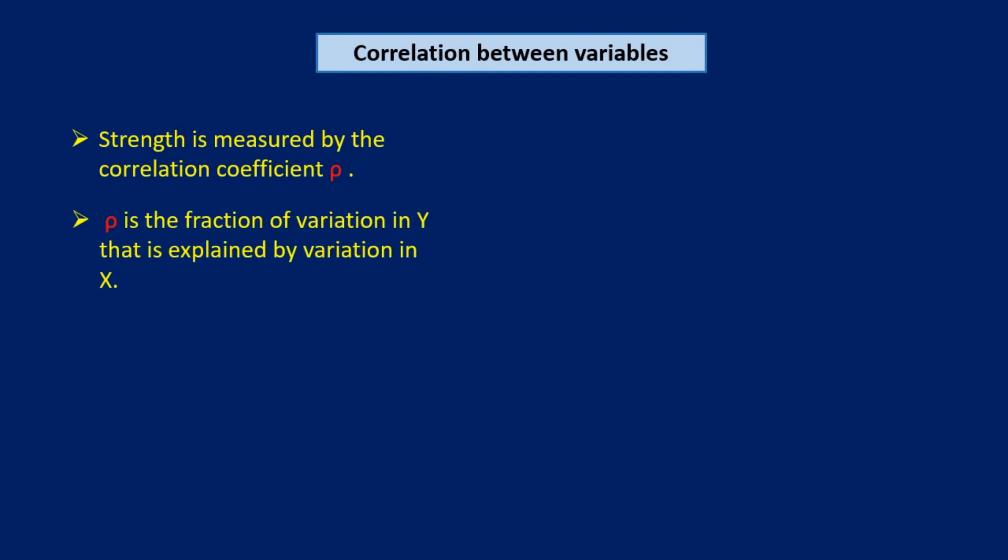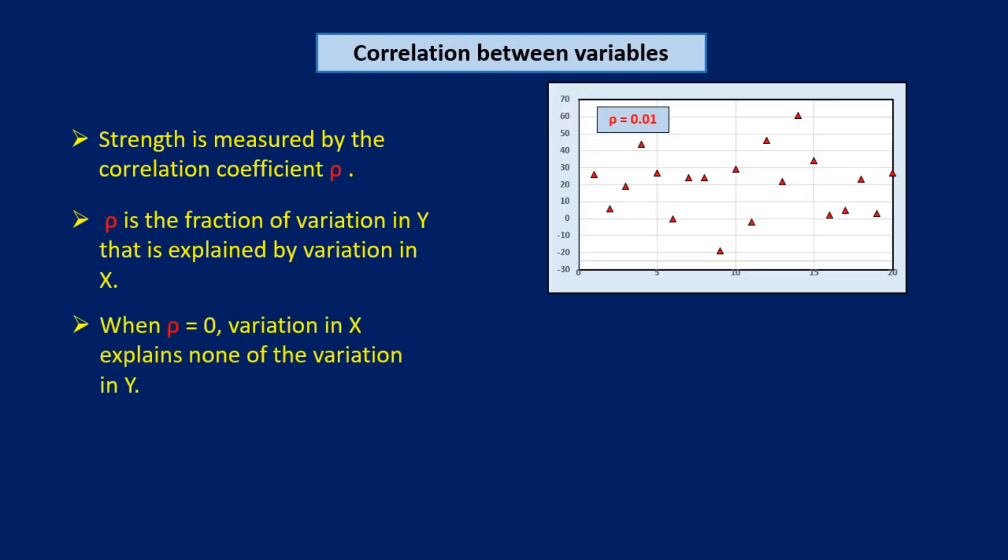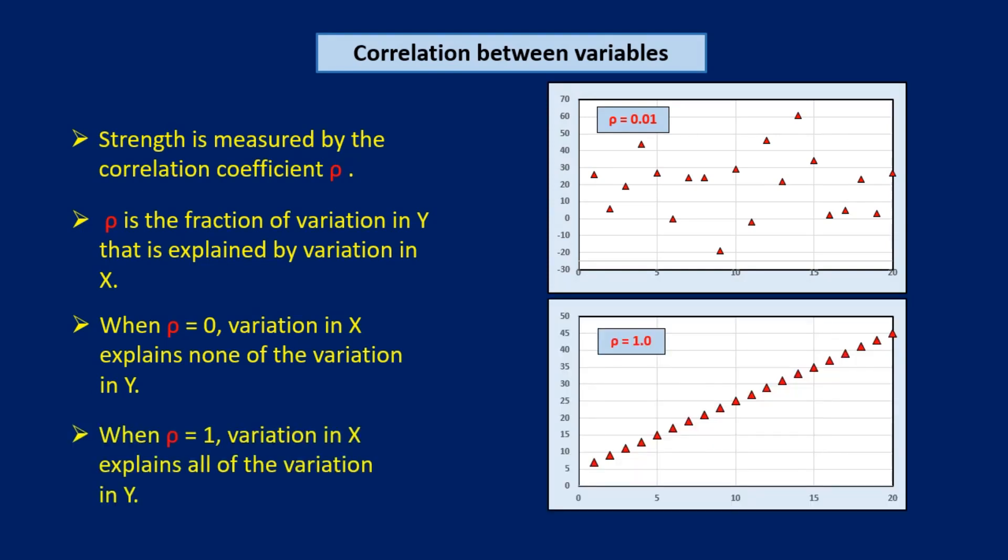Rho is a fraction that can vary between 0 and 1. The fraction measures the proportion of the total variation in y that is explained by variation in x. When rho equals 0, it means that the variation of x doesn't explain any of the variation in y, and we say that x and y are perfectly uncorrelated. When rho equals 1, this means that the variation of x entirely explains the variation in y, and we say that x and y are perfectly correlated.